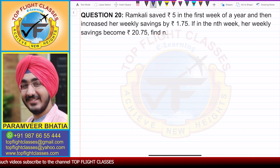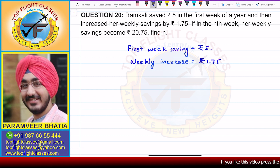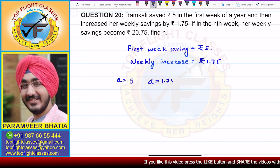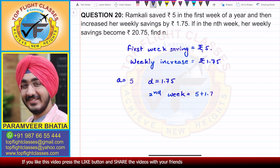So, what is the first week's savings? Rs 5. And how much is the weekly increase? Rs 1.75. You can clearly see that a will be equal to 5 and d will be equal to 1.75. Because if the first week is 5, then the second week's savings will be 5 plus 1.75, that is 6.75.